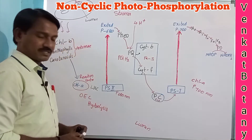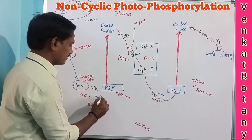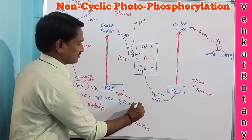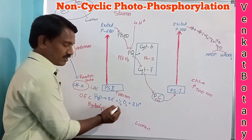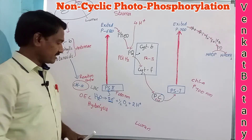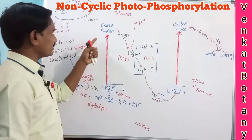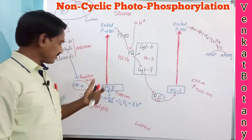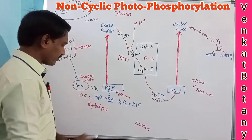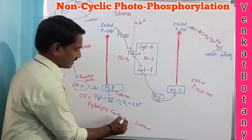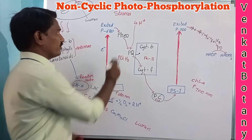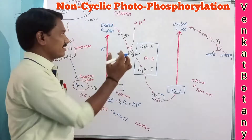The water molecule splits: H2O splits into two electrons, half O2, and two protons. Oxygen is evolved into the environment. The two electrons enter the non-cyclic electron transport system through PS2. Photolysis of water occurs in the presence of calcium, manganese, and chlorine ions. These electrons near PS2 are transferred to pheophytin, which is the first electron acceptor in the non-cyclic electron transport system.